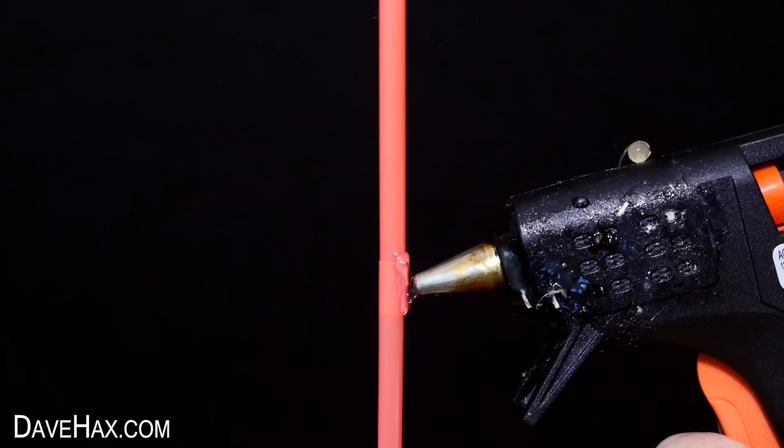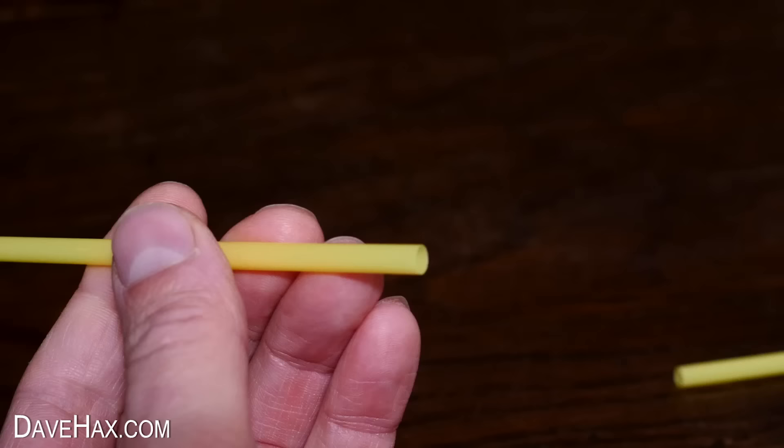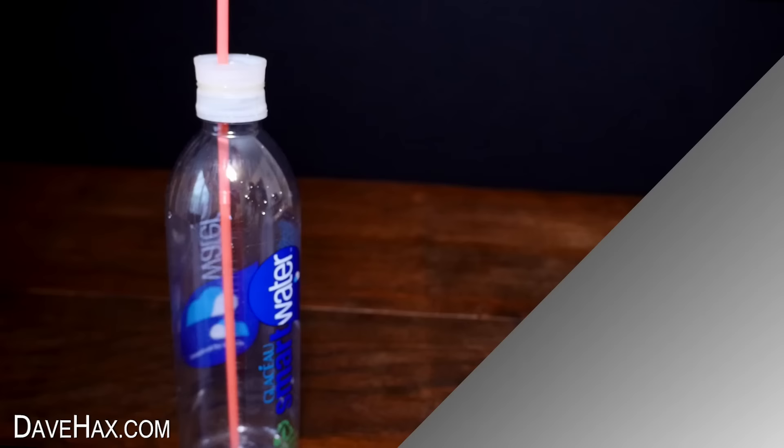We now need to lengthen the straw again using the same technique that we did before. Whilst that's drying, I took two yellow straws, cut off the flexi and joined these together too.